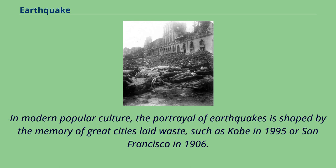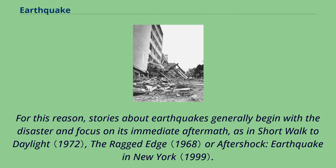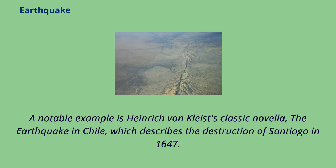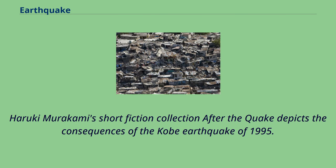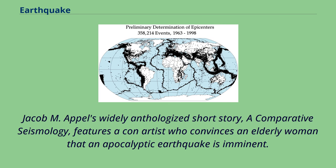In modern popular culture, the portrayal of earthquakes is shaped by the memory of great cities laid waste, such as Kobe in 1995 or San Francisco in 1906. Fictional earthquakes tend to strike suddenly and without warning, so stories about earthquakes generally begin with a disaster and focus on its immediate aftermath, as in Short Walk to Daylight, The Ragged Edge, or Aftershock: Earthquake in New York. A notable example is Heinrich von Kleist's classic novella The Earthquake in Chile, which describes the destruction of Santiago in 1647. Haruki Murakami's short fiction collection After the Quake depicts the consequences of the Kobe earthquake of 1995. The most popular single earthquake in fiction is the hypothetical 'Big One' expected of California's San Andreas Fault, as depicted in novels such as Richter 10, Goodbye California, 2012, and San Andreas.